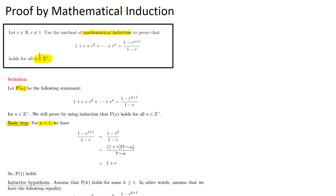We substitute n equals 1 into both sides of the equation. On the right hand side, subbing 1 in for n gives us 1 minus r to the 1+1, so 1 minus r squared, over 1 minus r. Now 1 minus r squared is a difference of two squares: that's (1+r)(1−r). The (1−r) terms cancel out, leaving 1+r, which is exactly what the left hand side gives when n equals 1, namely 1 plus r to the power of 1. So P(1) holds.